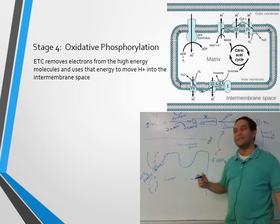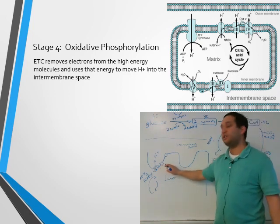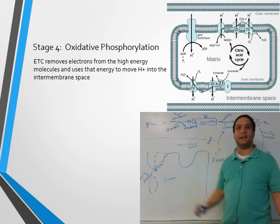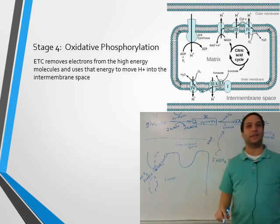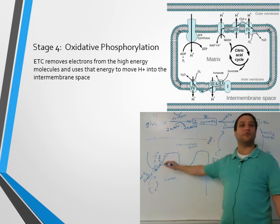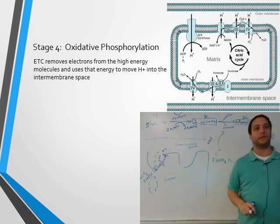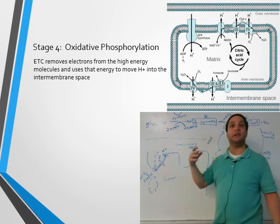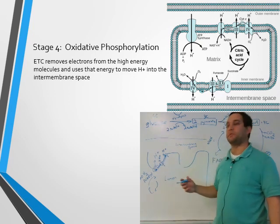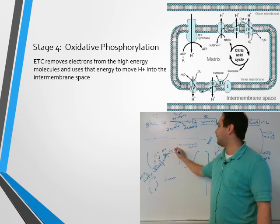The molecule next to it has higher electronegativity than the one before it, so it steals that electron — the electron jumps. Then it pushes hydrogen across again. The one next to it is even more electronegative, steals the electron, and pushes more hydrogen across. This continues until the electron reaches the most electronegative element we have studied: oxygen. Oxygen is the final electron acceptor. We've created an electrochemical gradient. The electron jumps to O2, and that oxygen gets converted into water.